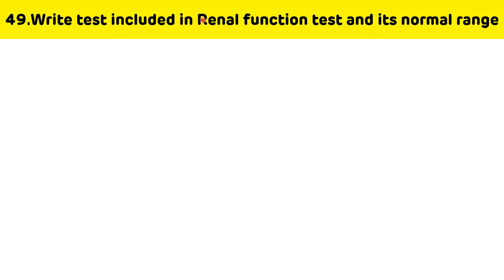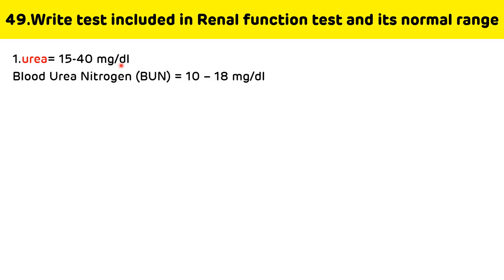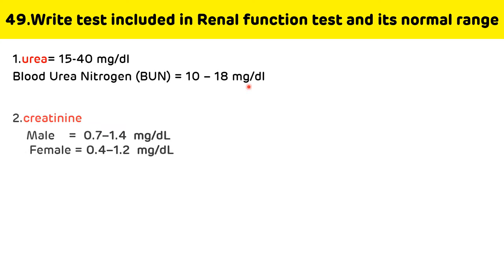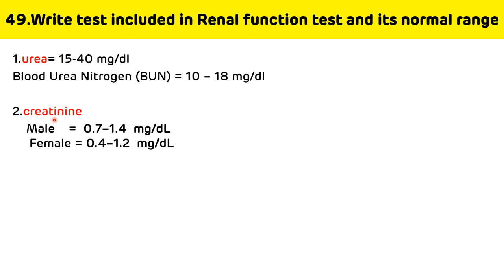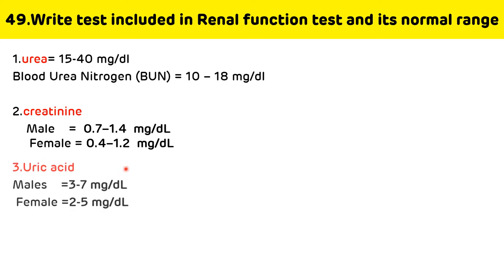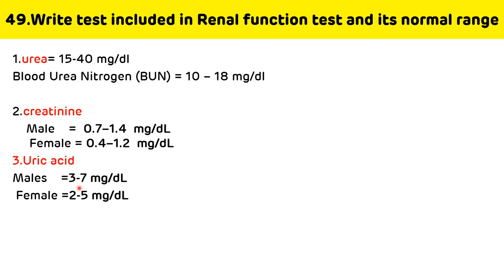Write the tests included in renal function tests and their normal ranges. The tests in RFT are urea, creatinine, and uric acid. Normal range of urea: 15–40 mg/dL; blood urea nitrogen: 10–18 mg/dL. Creatinine: 0.7–1.4 mg/dL in males, 0.4–1.2 mg/dL in females. Uric acid: 3–7 mg/dL in males, 2–5 mg/dL in females.